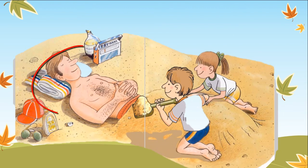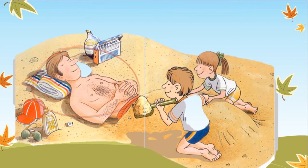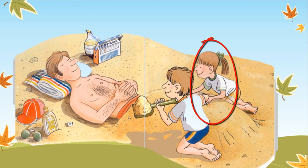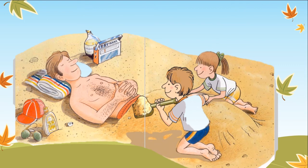Who can you see in this picture? Who is he? Yes! He is Dad! So who is he? Correct! That's Chip! Now, who is she? Well done! That's Biff! In this picture, Chip is pouring something on Dad. What is that? Correct! It's Sand! The word over here is Sand! Good job!